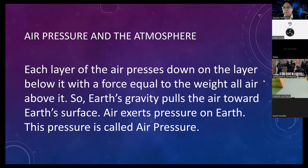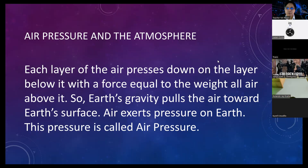Each layer of air presses down on the layer below it with a force equal to the weight of air above it. Earth's gravity pulls air towards the Earth's surface — remember that weight is pulled by gravitational pull, which is 9.8 meters per second squared. Air exerts pressure on Earth, and this pressure is called air pressure.